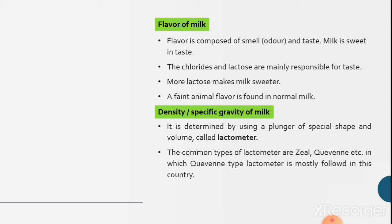Density or specific gravity of milk. The density or specific gravity of milk is determined by using a plunger of special shape and volume called lactometer. The common types of lactometer are Soxhlet, Quevenne, etc. Quevenne type lactometer is mostly followed in our country for the determination of density or specific gravity of milk.